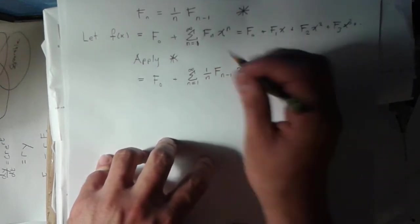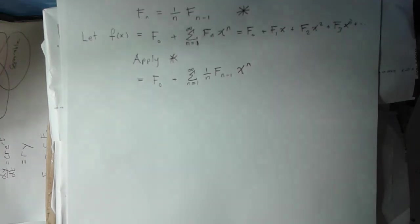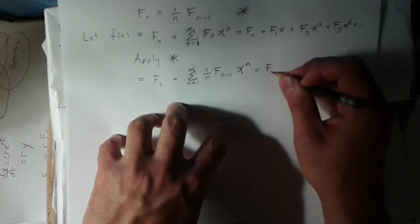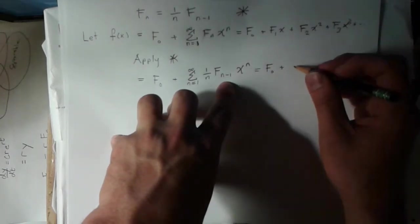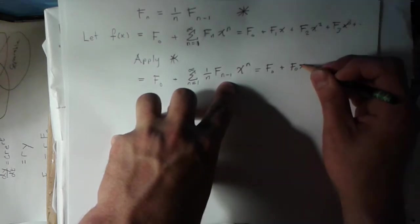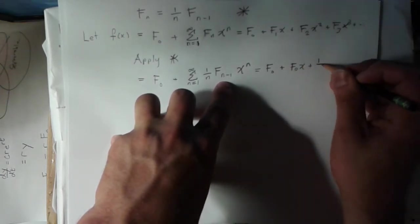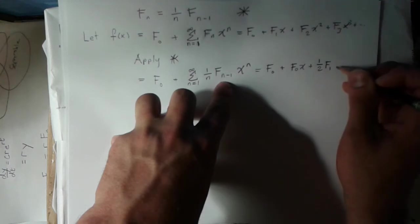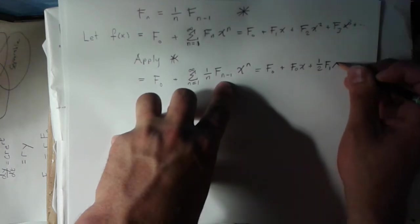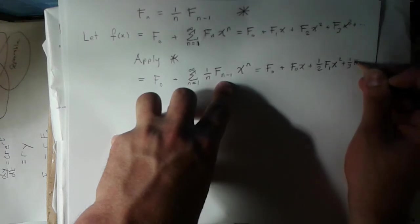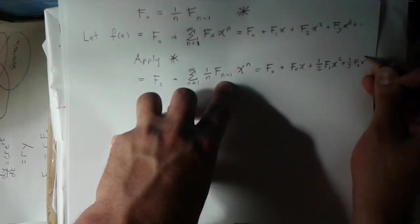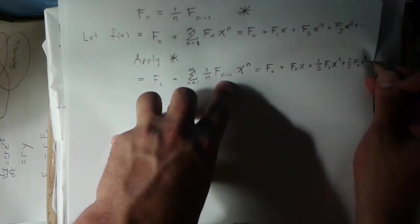I've still got the x to the n term there. What this looks like, if you want to see, this is f sub 0 plus, when I put in 1 here, this is just 1. This is f sub 0 x plus the next one is going to be 1 half f sub 1 x squared.